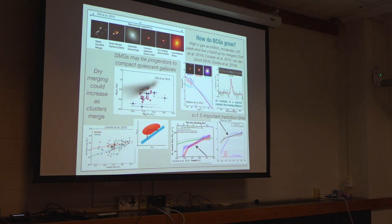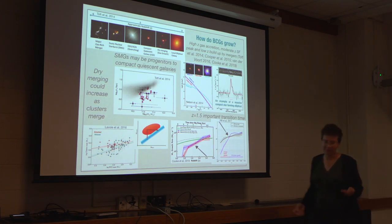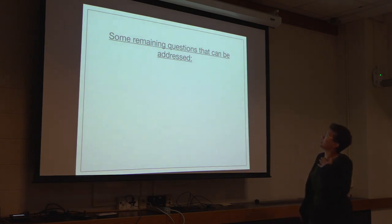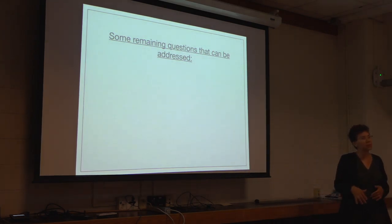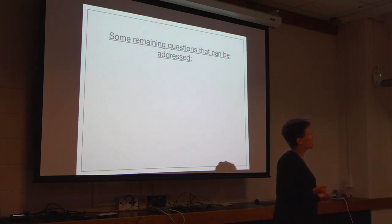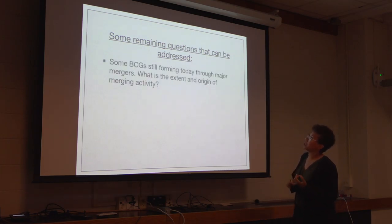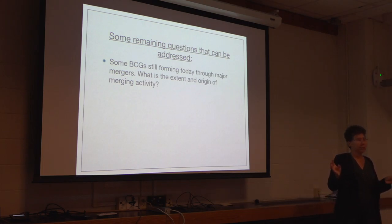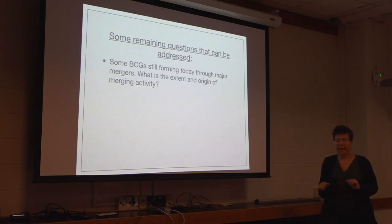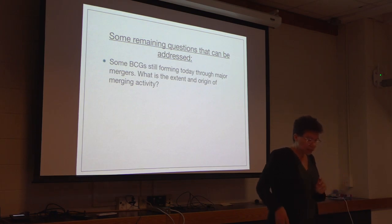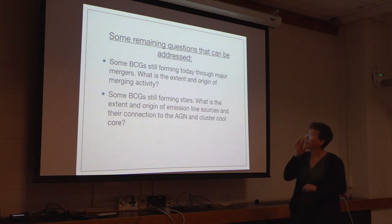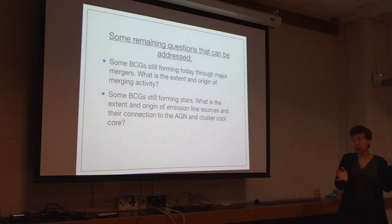To quote reality TV star Nicole Richie: 'I woke up today and I know everything about everything.' We have a picture of how BCGs grow — obviously that's not completely true. Some remaining questions that can be addressed about the growth of BCGs and the core of clusters are what my survey has been working on for the last few years. Some BCGs are still forming today through major mergers — there are like two examples in our set of 23 where there are lots of large red galaxies that seem like they could easily merge in the space of a gigayear. What is the extent and origin of this merging activity? Some BCGs are still forming a few stars. What is the extent and origin of emission line sources and their connection to the ICL?